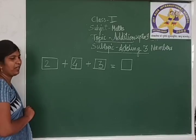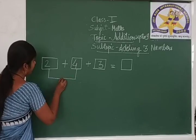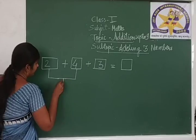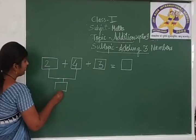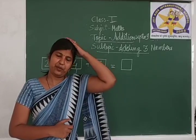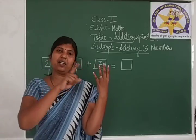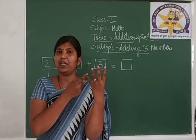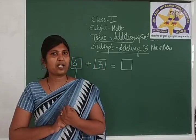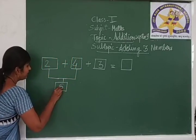So which are these 2 numbers? We have 2 and 4. We have to add these 2 numbers first. So add 2 and 4. Keep 2 in your mind and 4 on your fingers. And count forward: after 2 comes 3, 4, 5 and 6. So what is the answer? The answer is 6. So write down 6 in this box.